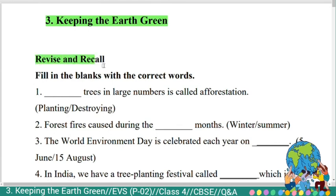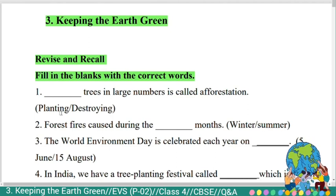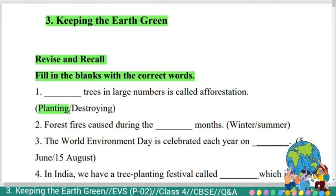Revise and recall questions. First section: fill in the blanks with the correct words. First question: 'Planting or destroying trees in large numbers is called afforestation?' The correct answer is planting. Planting trees in large numbers is called afforestation.